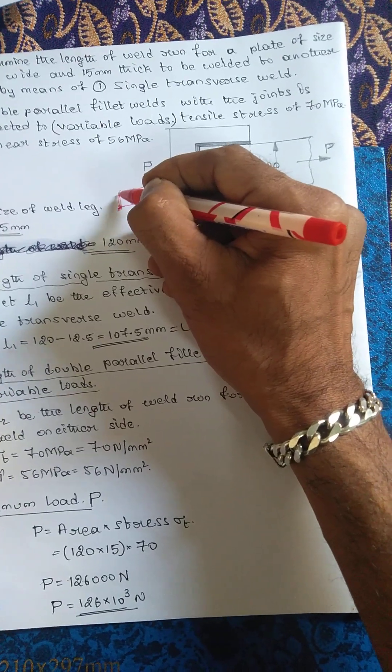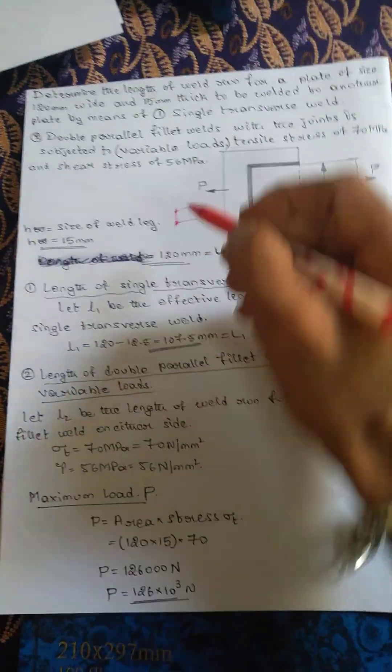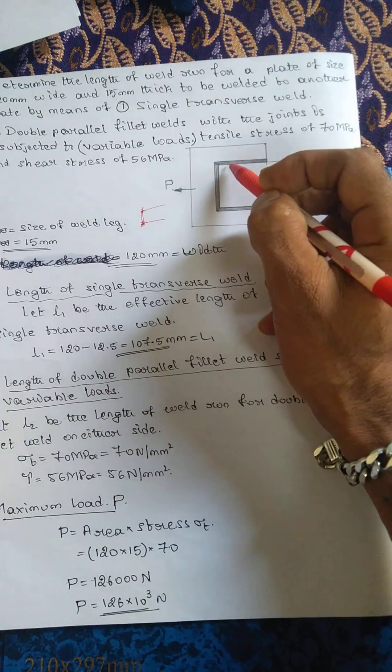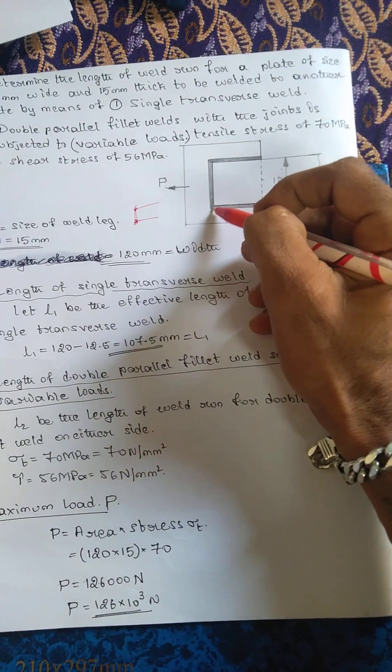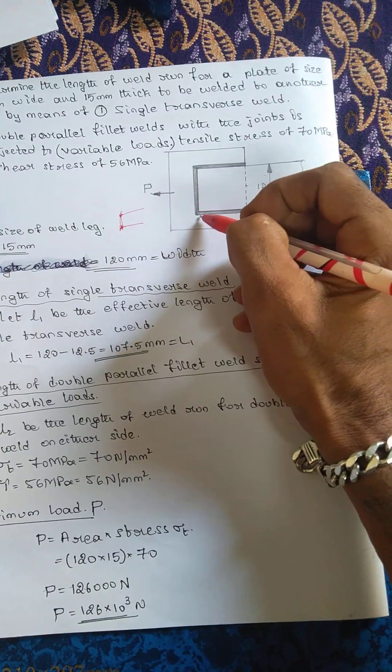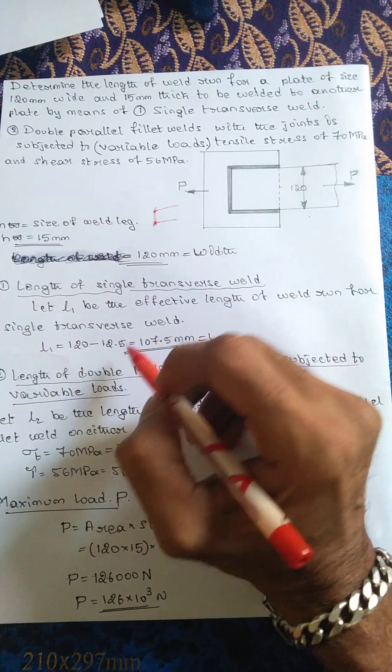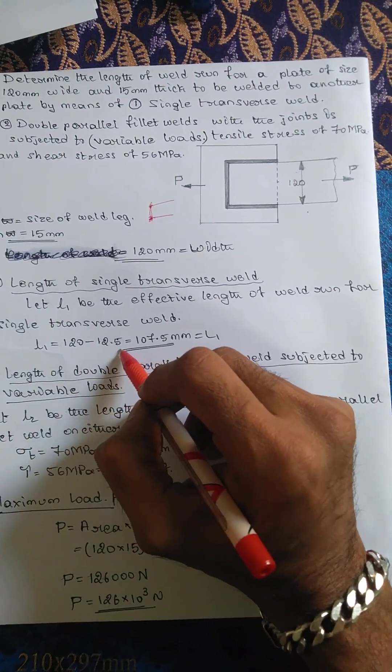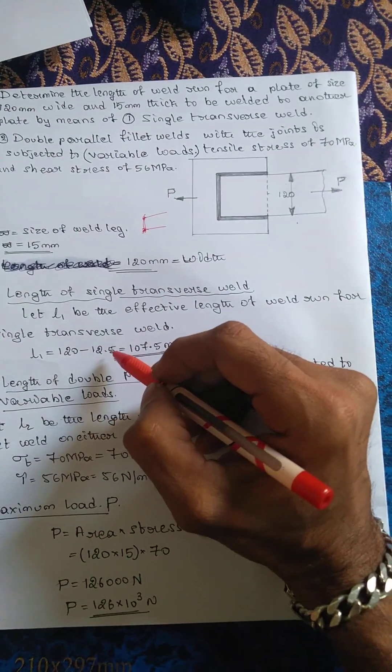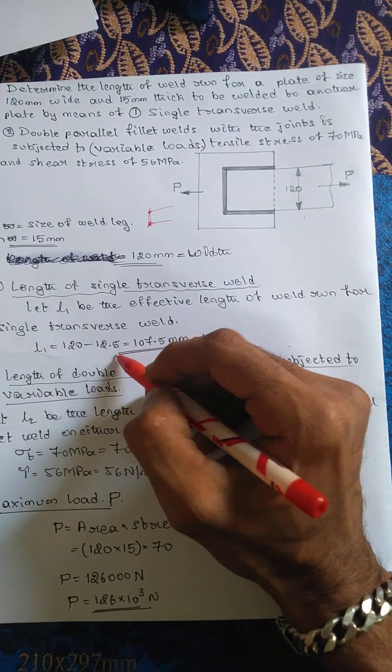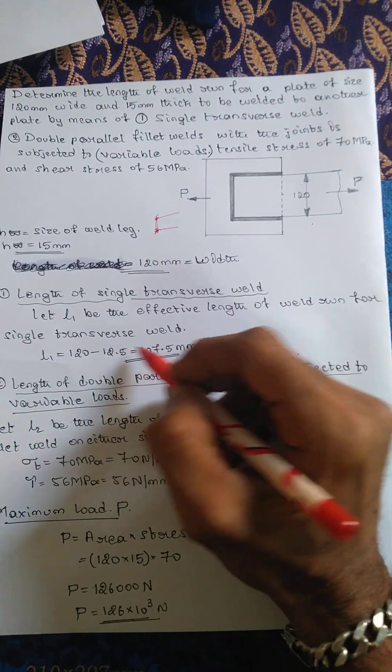That is why in this case, since parallel fillet weld is also there, in transverse weld we will not consider any start and stop of weld run, that's why it is deducted 12.5. Some data handbooks or some books may deduct with some other value, but it is common. You have to mention it clearly.